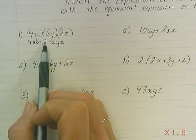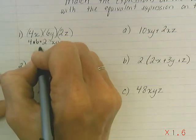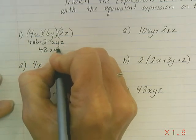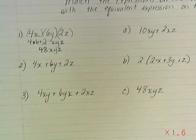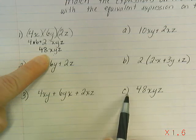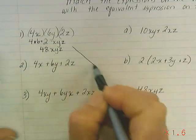4 times 6 times 2 is 48, so we're going to simplify that to 48xyz. I notice this 48xyz is the same as choice C, so these two get matched up.